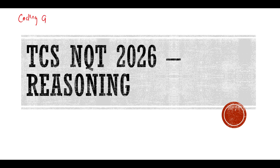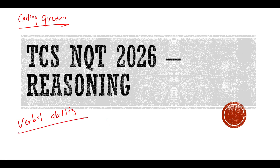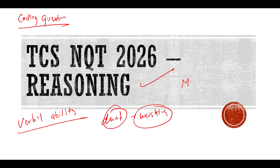Hi everyone, this is our final roadmap video. If you have not watched our previous videos, you can watch them because we discussed the coding questions total sheet, the weightage, verbal ability, quantitative aptitude, and their weightage. Today in this video we will be talking about reasoning. It's one of the most important topics for TCS NQT because it has minimum syllabus and maximum output — the maximum number of questions in TCS NQT is from reasoning.